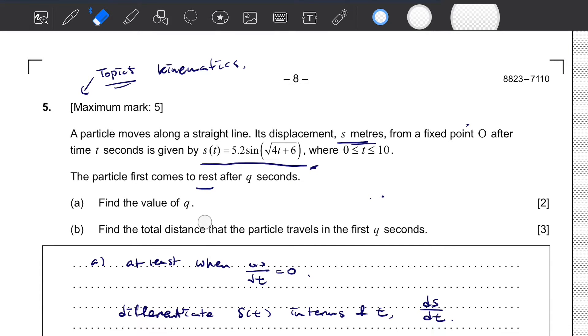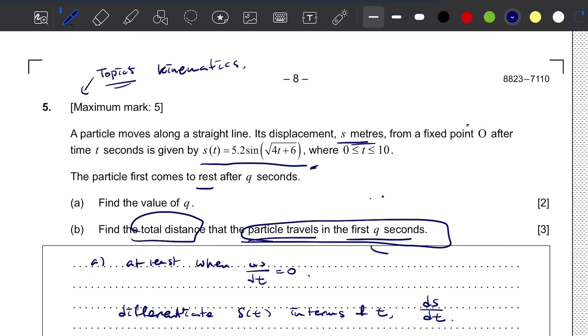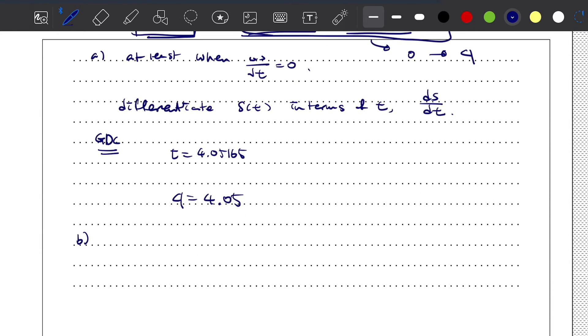Let's do question b. We need to find the total distance that the particle travels in the first q seconds. This second part of the question gives us the range: 0 to q seconds. Since we need to find the total distance, this is a definite integral question. We can set our equation as 0 to q, or 0 to 4.05165, since we know the q value already from the previous question, of s(t) in terms of dt.